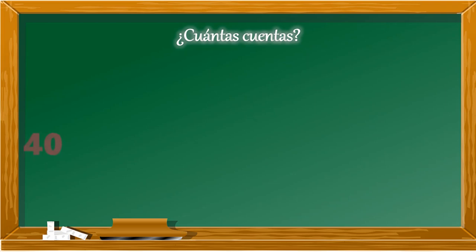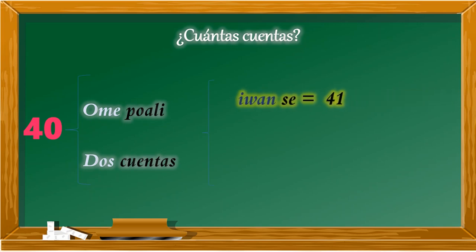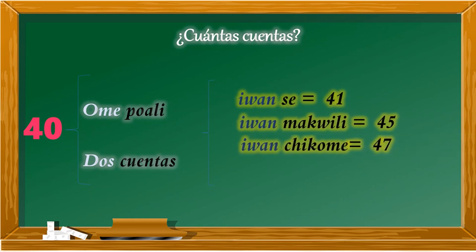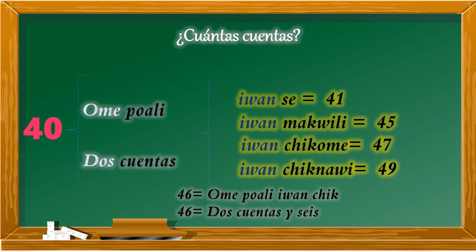¿Cuántas cuentas? Recordemos que el poale equivale a 20 y es una cuenta. Así que para conformar 40 necesitaremos 2 cuentas, que se diría ome poale. De aquí se vuelven a repetir los números: para 41 diríamos ome poale iwanse, para 45 ome poale iwamakuili, para 47 ome poale iwamachikome, para el 49 ome poale iwamachiknawi.